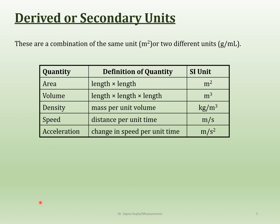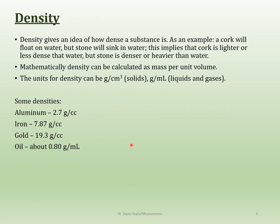We're going to focus on density. Density gives an idea of how dense a substance is — it's the amount of mass per volume. If you have a small volume and a large mass, it's dense. If you have the same volume but less mass, it's going to be light.